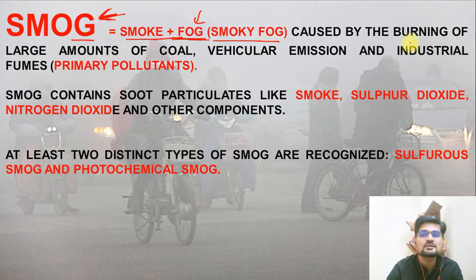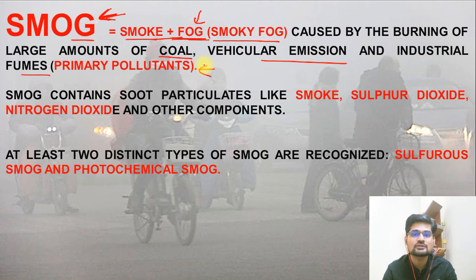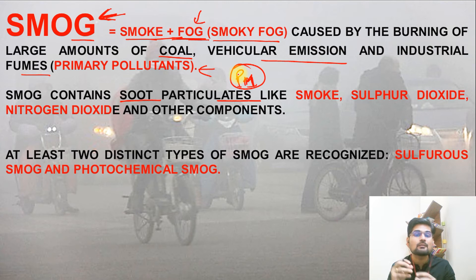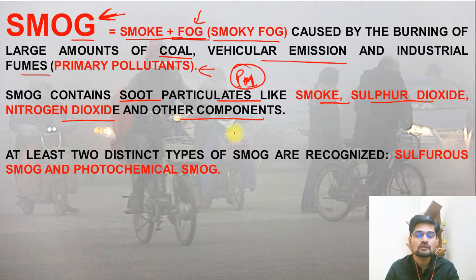Smog is caused by burning of large amounts of coal or fossil fuels, vehicular emissions, and industrial fumes, which are together called primary pollutants. When these primary pollutants mix with fog, smog is formed. Smog contains soot particulates — particulate matter, which we call PM. Remember PM2.5 and PM10, classified depending upon their size. The major components of that smoke include sulfur dioxide, nitrogen dioxide, and others, which mix with fog to form smog.